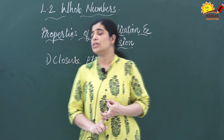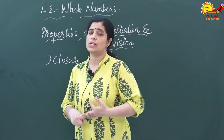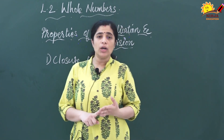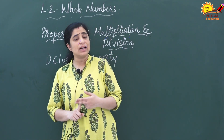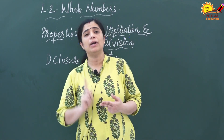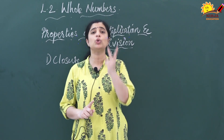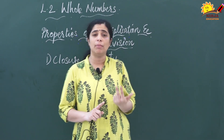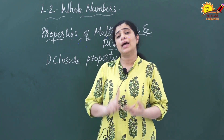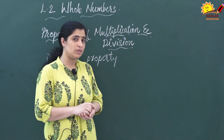The first one we are going to discuss is the closure property. In the case of addition, when we are adding two whole numbers and getting the answer as a whole number, that was closure property. Here in multiplication also, when we are multiplying two whole numbers and getting the answer as a whole number, then that property is true in the case of multiplication.